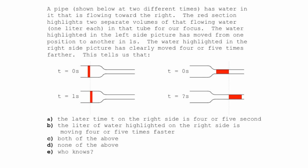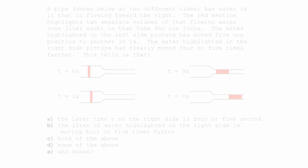This tells us that: the later time t on the right side is four or five seconds, because it moved four or five times as far. Or the liter of water highlighted on the right side is moving four or five times faster. Or both of the above or none of the above or who knows.